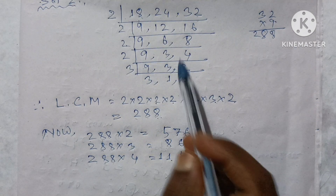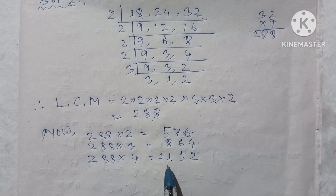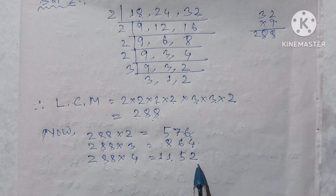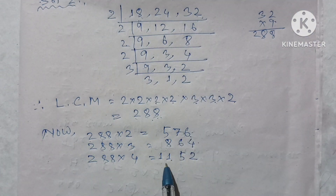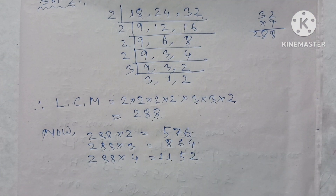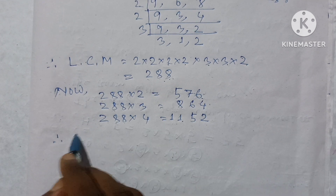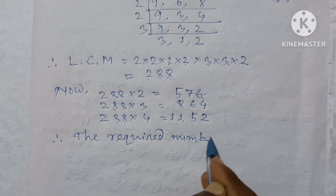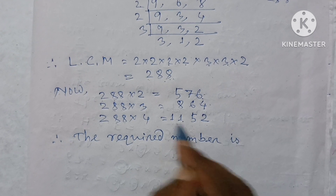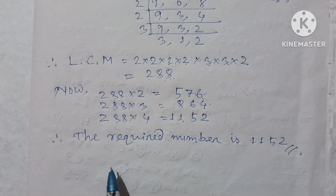The number is a multiple and is divisible. We have 4 digits. The multiple is divisible. So it is 1152. Therefore, the required number is 1152. The smallest 4-digit number divisible by 18, 24, and 32 is 1152.